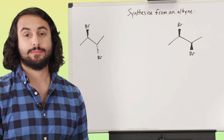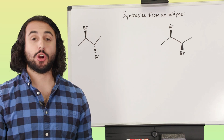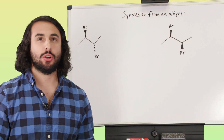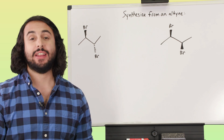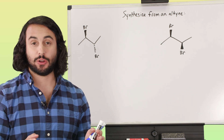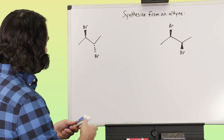We know we have to start from an alkyne — that is our designated starting material — and we're trying to get these dihalides. A reaction that should come to mind is dihalogenation. That is definitely one way we know to get dihalides, and specifically vicinal dihalides, because in a dihalogenation we're going to get two halogens on adjacent carbons.